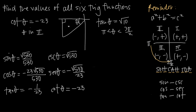We think of tangent of theta as root 10 over 1, and since tangent is opposite over adjacent, the opposite side is root 10 and the adjacent side is 1. In quadrant three, both x and y are negative, so both values are negative. Negative root 10 divided by negative 1 gives positive root 10 for tangent of theta, which is consistent.